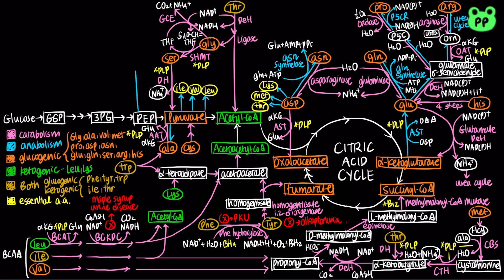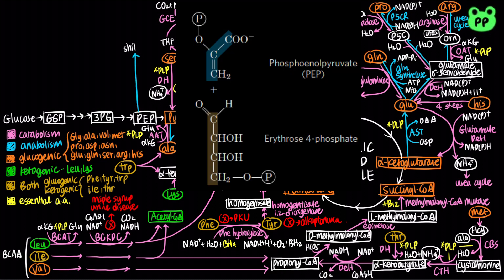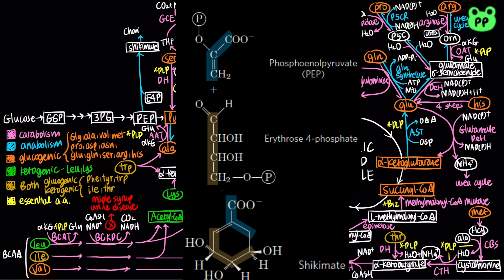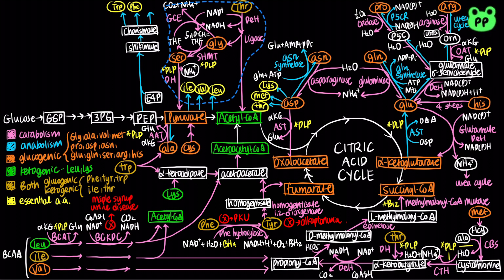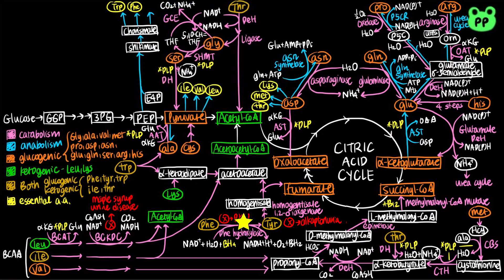In bacteria, the aromatic amino acids can be synthesized from the glycolysis intermediate phosphoenolpyruvate, abbreviated as PEP, and erythrose-4-phosphate, which is an intermediate of the pentose phosphate pathway, abbreviated as E4P. Phosphoenolpyruvate and erythrose-4-phosphate can be converted to the intermediates shikimate and chorismate through many steps. Chorismate in turn serves as a precursor to the biosynthesis of tryptophan, phenylalanine, and tyrosine. Note that tyrosine can be synthesized from phenylalanine by phenylalanine hydroxylase; therefore, only tryptophan and phenylalanine are essential amino acids for humans.